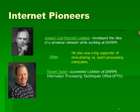Two of the most important pioneers of the Internet were both employees of the Defense Advanced Research Projects Agency, or DARPA. The first was Joseph Carl Robnett, or JCR Licklider, who developed the idea of a universal network while working at DARPA. He was also a big supporter of timesharing as an alternative to batch processing for mainframe computers.